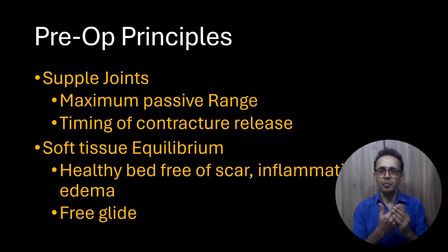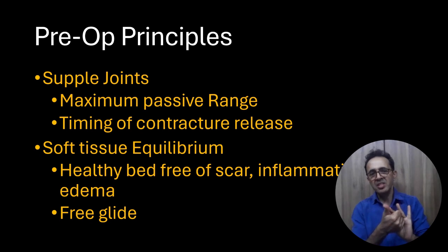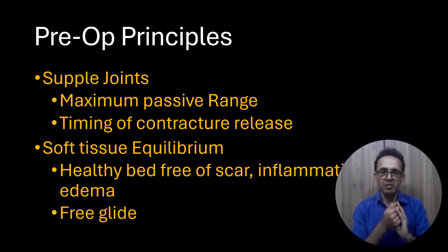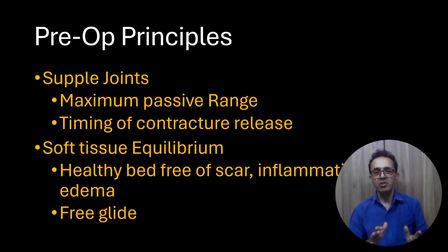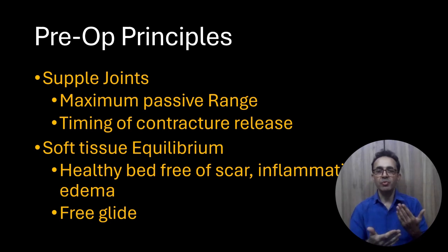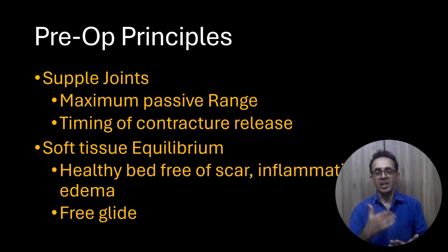The first pre-operative principle is supple joints. All joints where we are planning tendon transfers should have maximum passive range of movement. In some instances there may be contractures requiring release, but contracture release and tendon transfers should not be done simultaneously, because both require immobilization. First release the contracture, allow the wound to heal, and then proceed with tendon transfers to avoid increased stiffness.